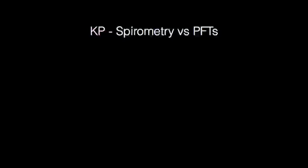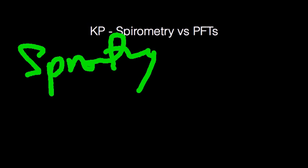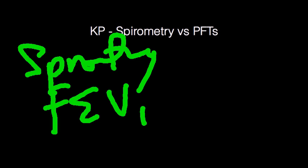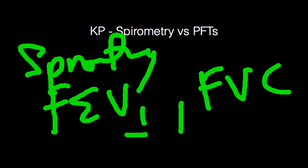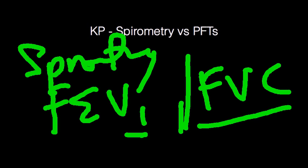Welcome. Let's talk about the difference between a spirometry and a PFT. Spirometry basically includes the FEV1 and the forced vital capacity — whatever goes on in the first second followed by the full breath that the patient exhales. You will also have the FEV1/FVC ratio, especially when you need to look at patients with COPD and risk stratify them and assess their severity.